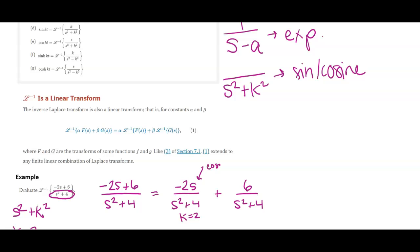So this must be a cosine. And then I have a numerical value over S squared plus 4, again K equals 2, so that must give me a sine.